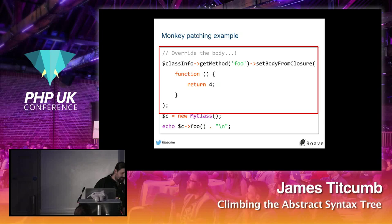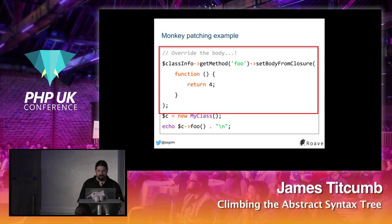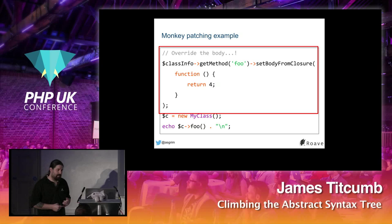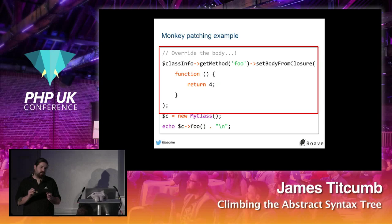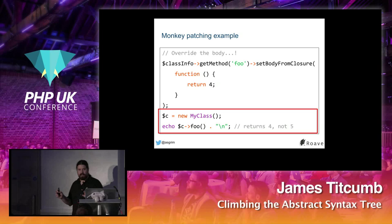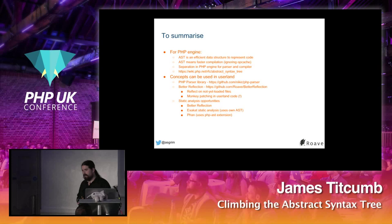Using Better Reflection's get_method('foo'), we have a new function not in core reflection called set_body_from_closure, where we pass a closure that returns 4 instead of 5. You can also set the body from a string or pass AST nodes in Nikita's php-parser format. The registered class loader kicks in when you try to instantiate my_class and loads the modified version — so it returns 4 not 5.